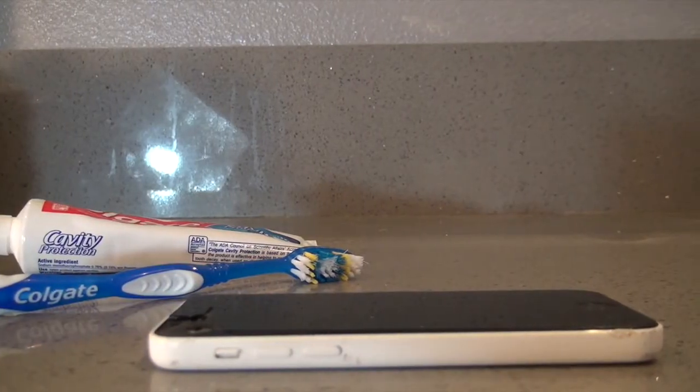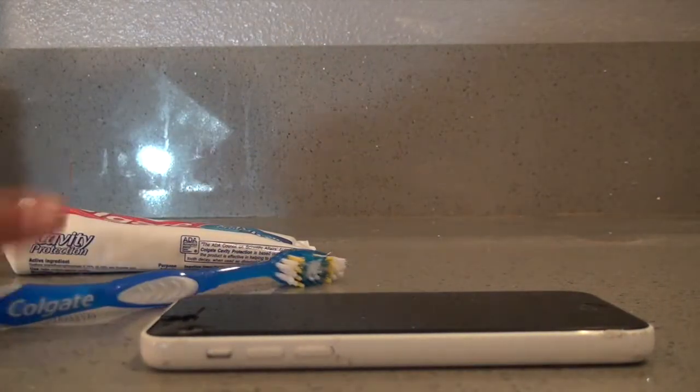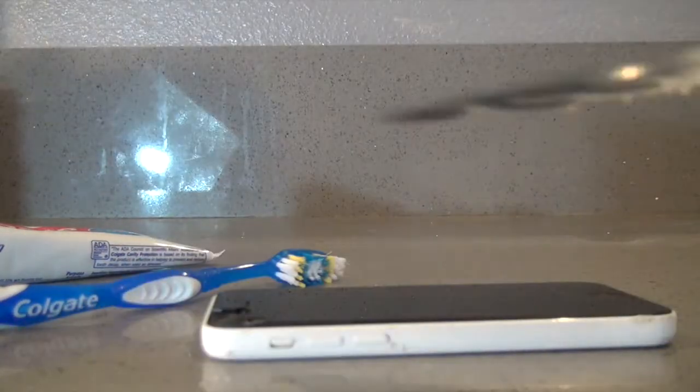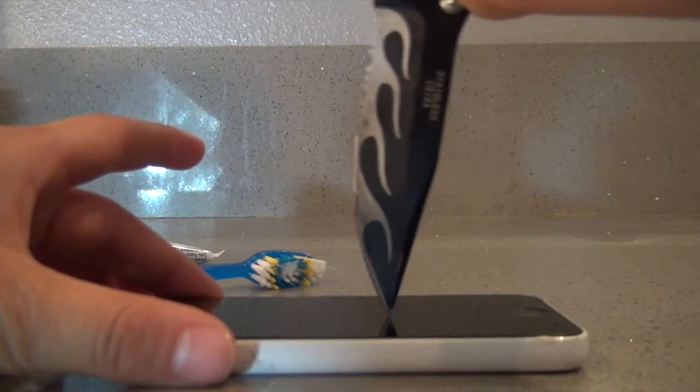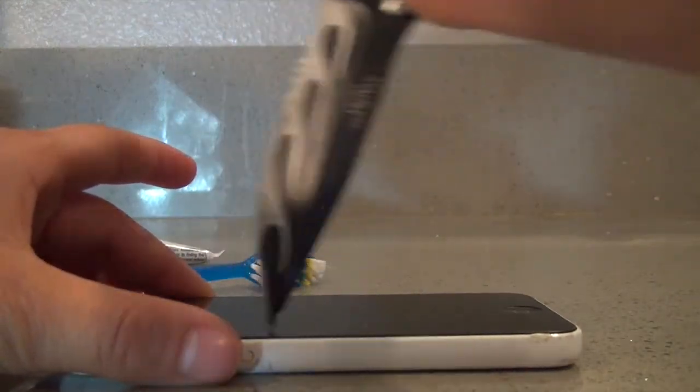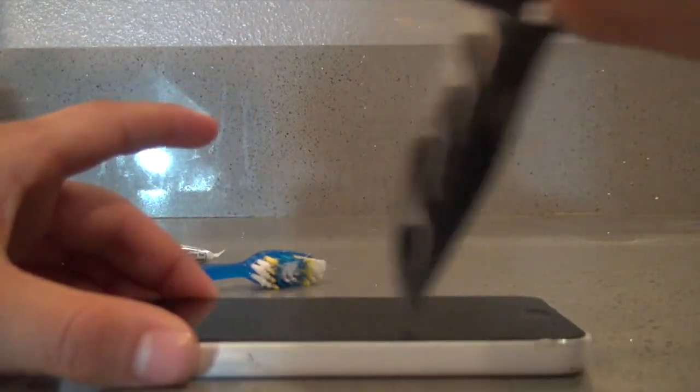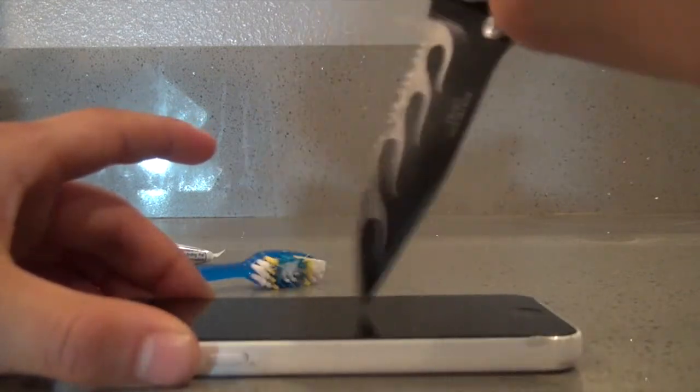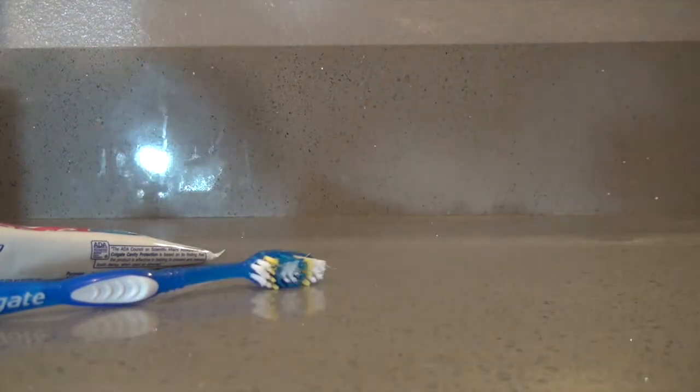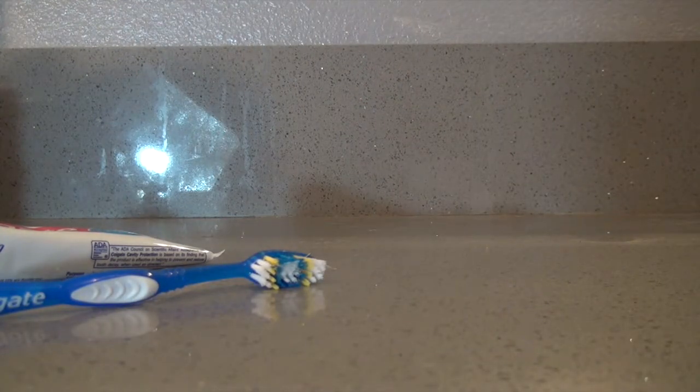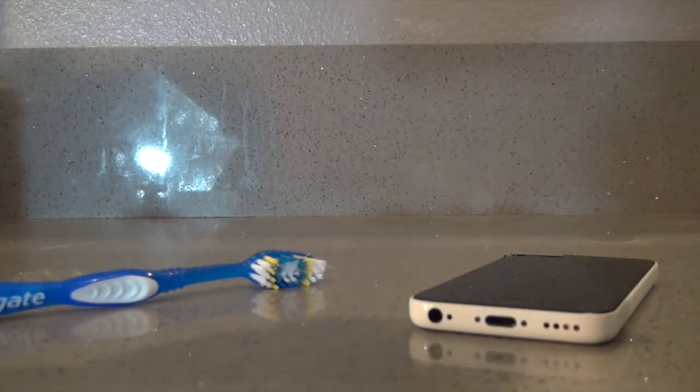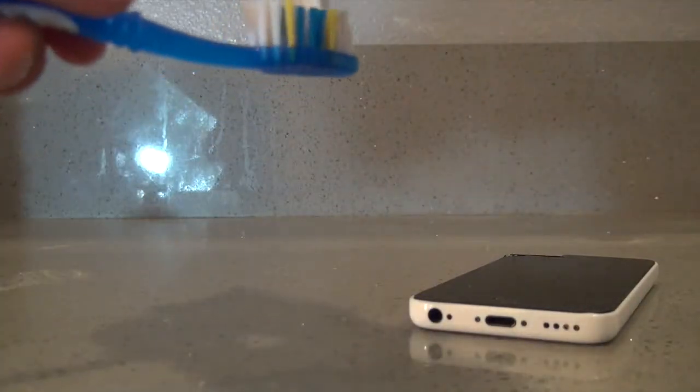For life hack seven, all you're gonna need is a toothbrush, white toothpaste, and a phone or iPod that has some scratches in it. I have a knife here to put some scratches in it. I'm making these scratches good. Now I'm wiping it off with the cloth or your shirt, but see it doesn't really come off.